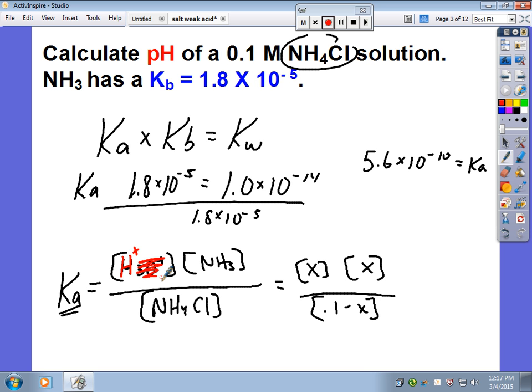So what do you know? You know that this is equal to 5.6 times 10 to the minus 10th. You ignore this X because it's small. And then you simply have X squared divided by 0.1 equals 5.6 times 10 to the minus 10th. And if I solve for X, which is my H plus ion, my molarity, I get 7.5 times 10 to the minus 6 molarity.